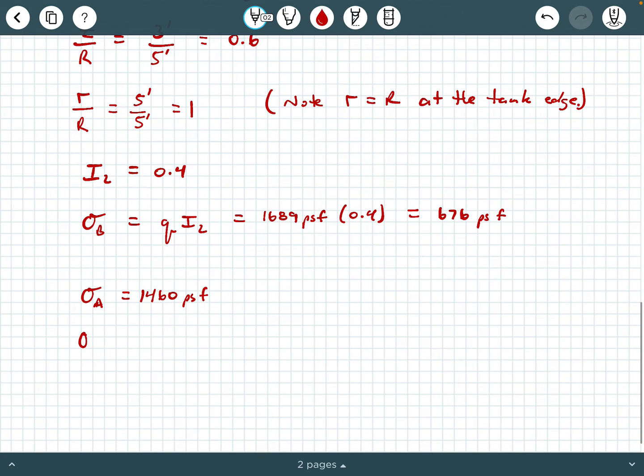So σ_A is 1460 PSF and σ_B is 676 PSF. Now one thing I want us to note is the stress at the edge of the tank, which is at point B, is significantly less, more than half less than the stress at the center of the tank. Why is this? Does this make sense? Well sure it does.